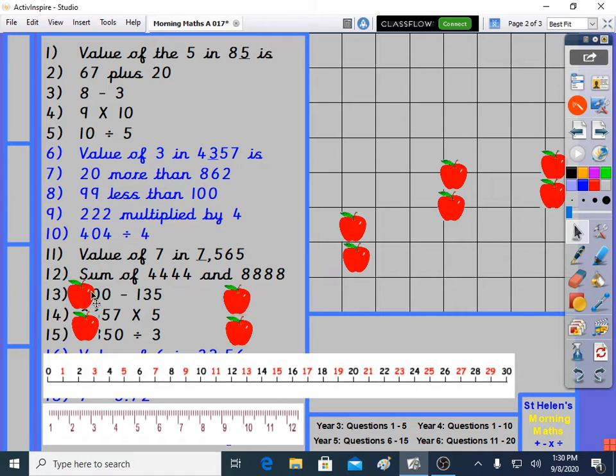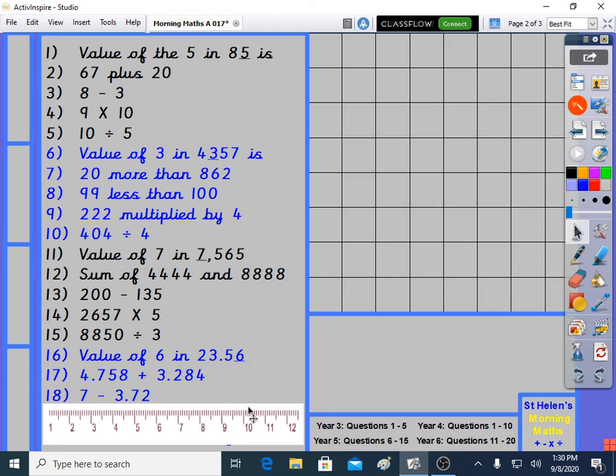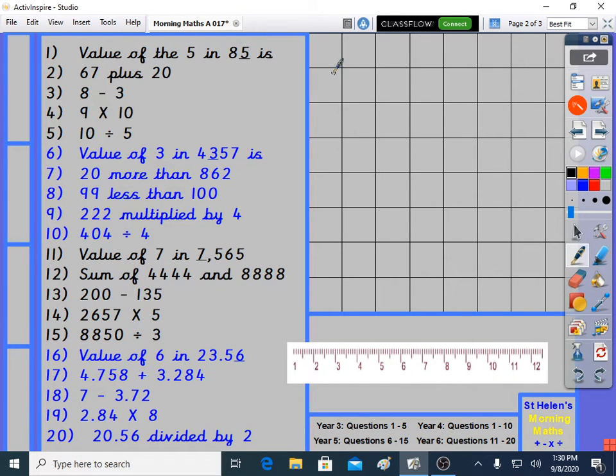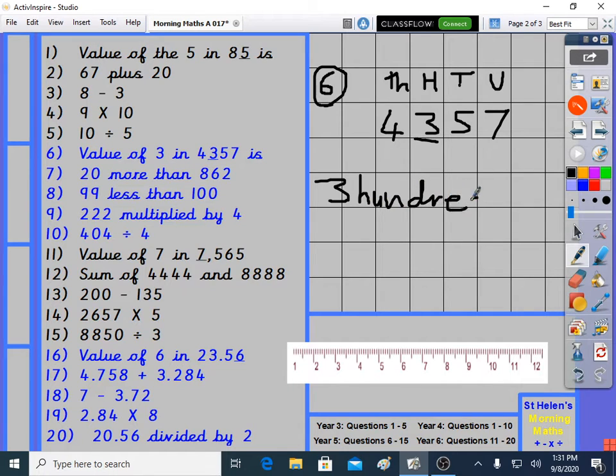Right, let's move on to the 4-level work. Let's get rid of our apples. And let's get going with question 6. Value of 3 in 4,357. 4,357. Value of the 3. Units. It's not units. Tens. It's not tens. Hundreds. It's hundreds. It's not thousands either, is it? It's hundreds. So the answer is 300. So I'm sure you're very good at these questions by now. In brackets, the digits answer is 300. And that's question 6.